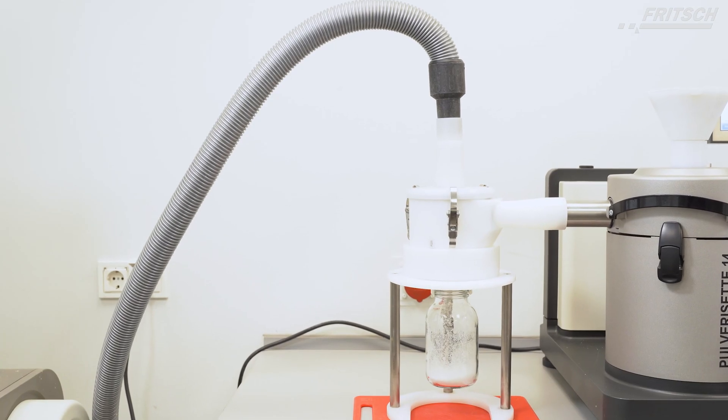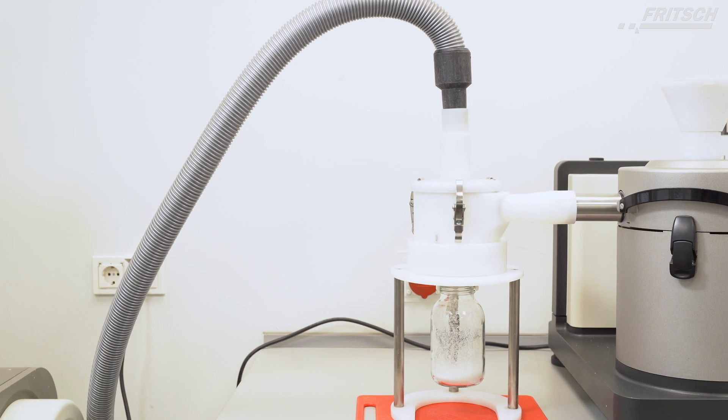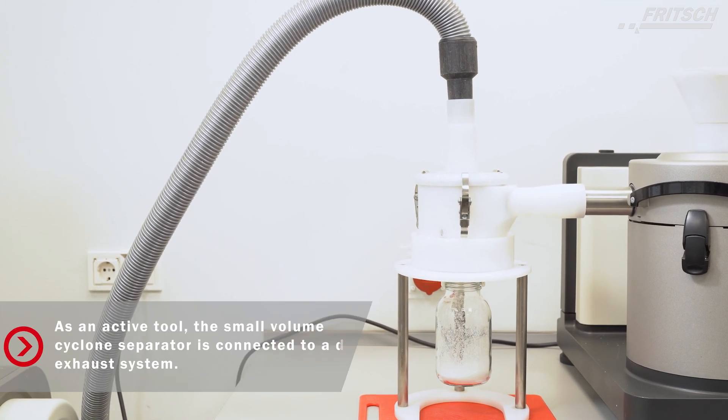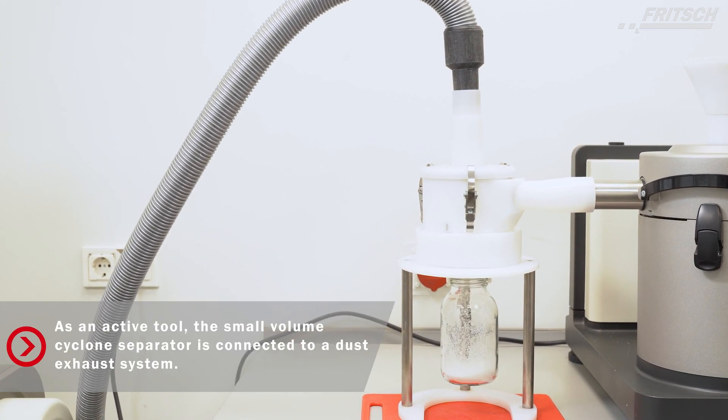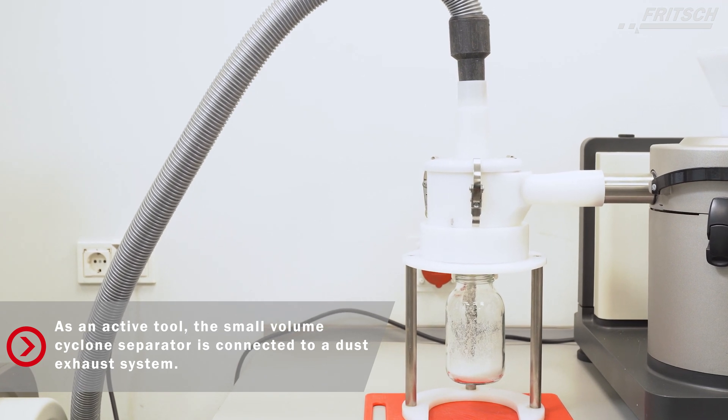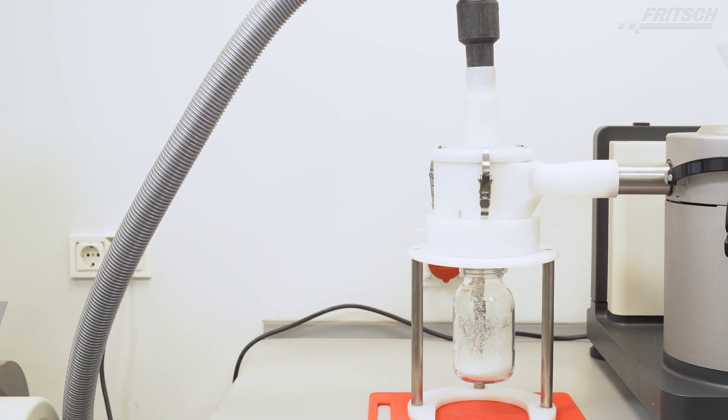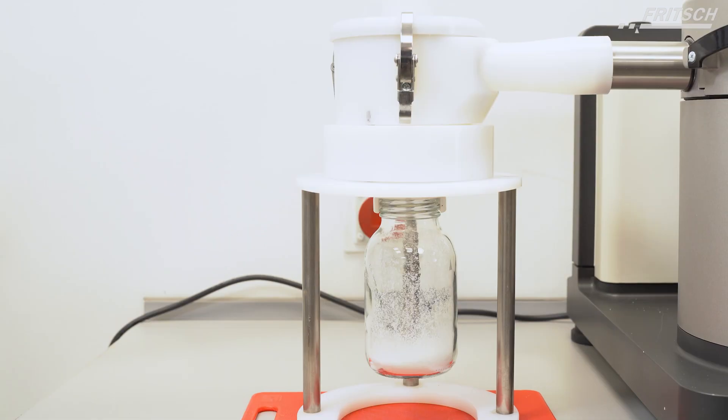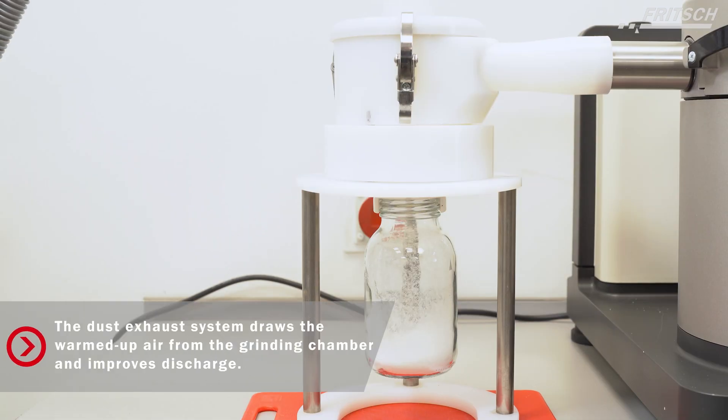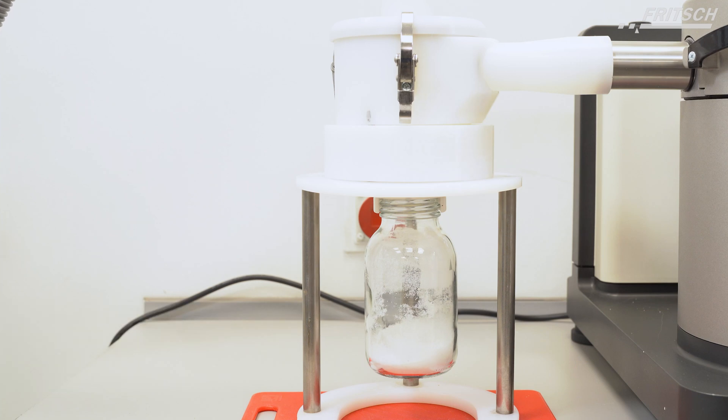For our application we use the small volume cyclone separator as a passive tool. This small volume cyclone separator could also be used as an active tool which is very useful for cleaning the instrument, transporting the particles, and cooling down the sample which is very important for plastic samples.